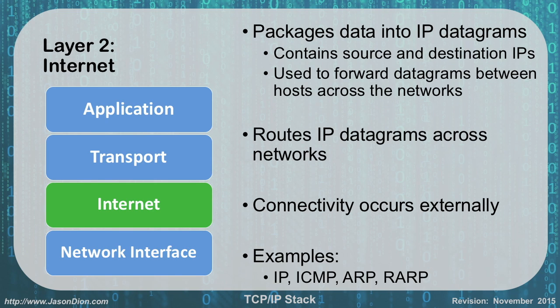The second layer of the DOD model, the TCP/IP model, is the internet layer. This is what we call the network layer in OSI. Here we're dealing with routers and IP — we're taking our IP datagrams, which have our source and destination IPs, and forwarding those datagrams between different networks, just like we did before with routers. We're routing IP datagrams across networks, and this connectivity occurs external to our local area networks — this is where we get into wide area networks as well. Things in this layer include IP, ICMP, ARP, and reverse ARP.